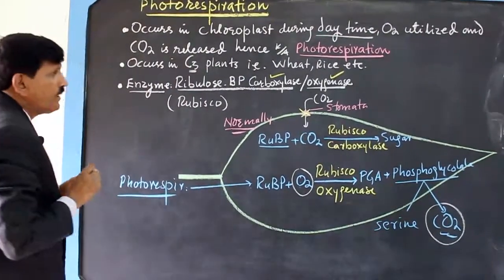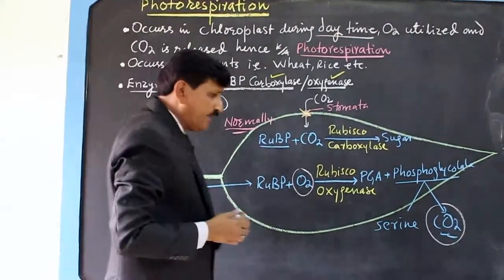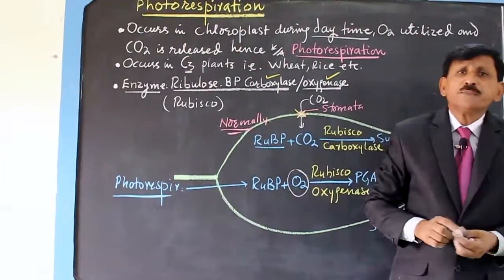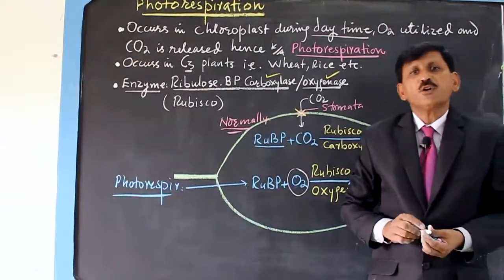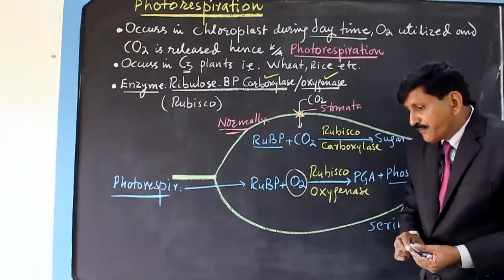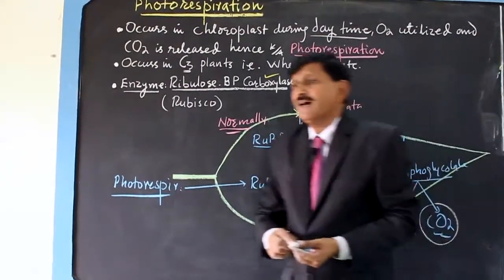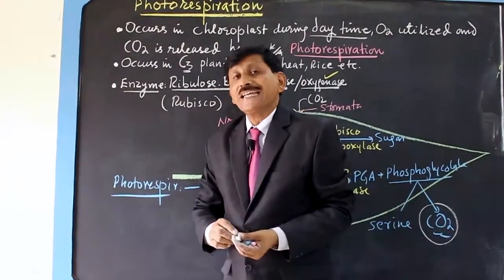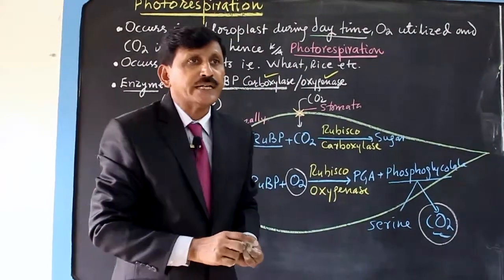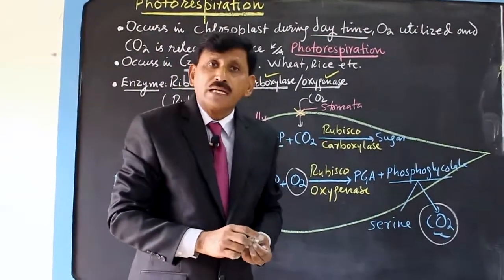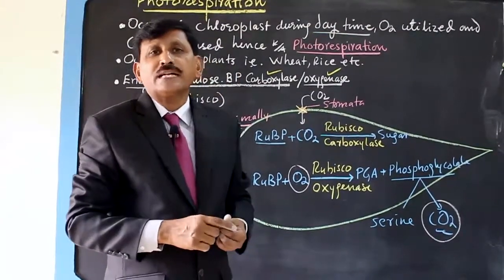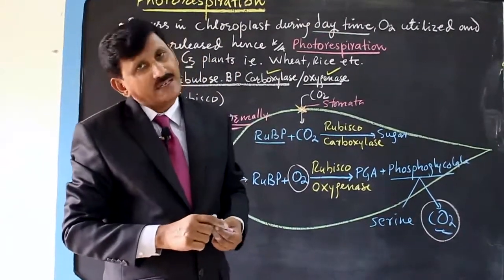Photorespiration occurs in C3 plants. C4 plants do not undergo photorespiration, because during hot and dry days, their four-carbon compounds provide carbon dioxide directly to the Calvin cycle, preventing the oxygenase activity of RuBisCO.